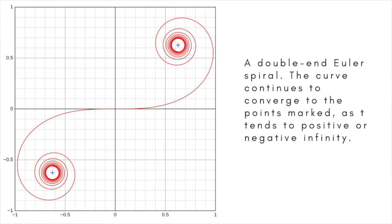The Euler spiral, also known as the Cornu spiral or clothoid, is defined as the curve in which the curvature increases linearly with the arc length.